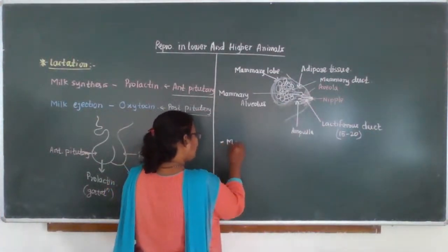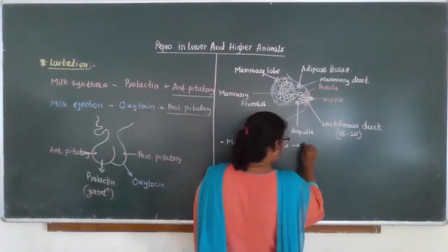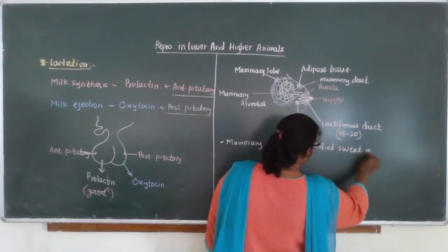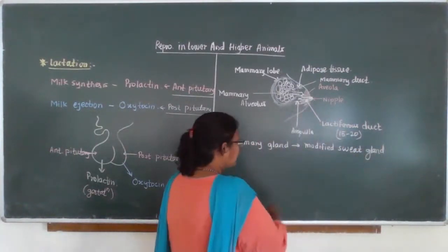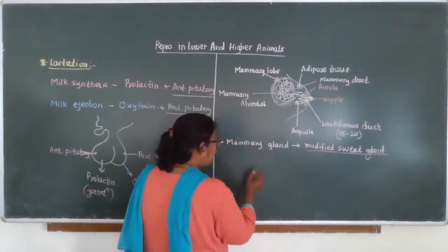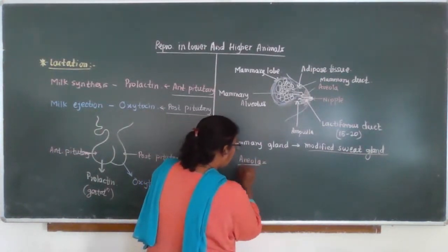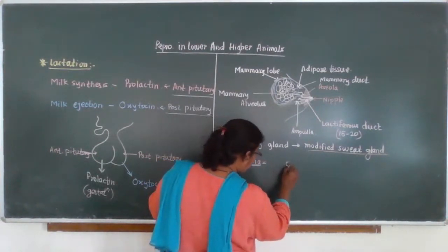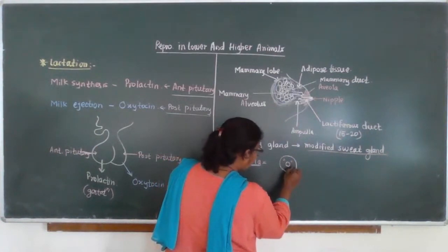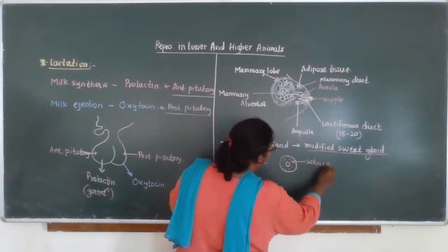The mammary gland is a modified sweat gland — this can be asked in NEET. The nipple is surrounded by the areola, a darkened region. This areola has small openings of the sebaceous gland. In the skin there are two major glands: the sweat gland and the sebaceous gland. The sweat gland secretes sweat, while the sebaceous gland secretes sebum, which is an oily secretion.